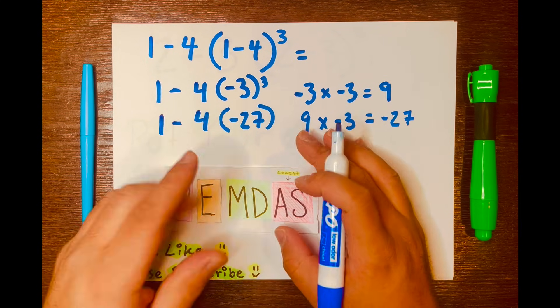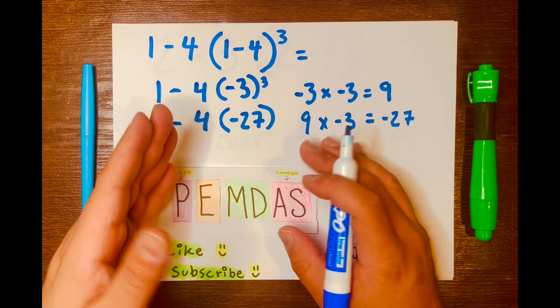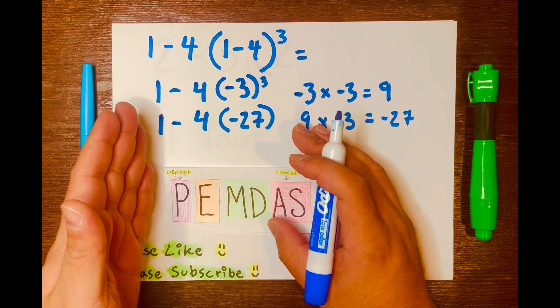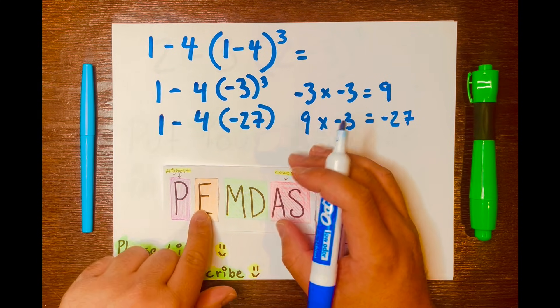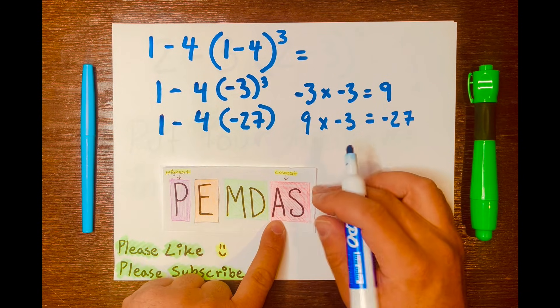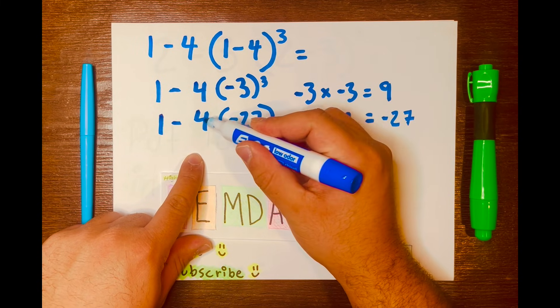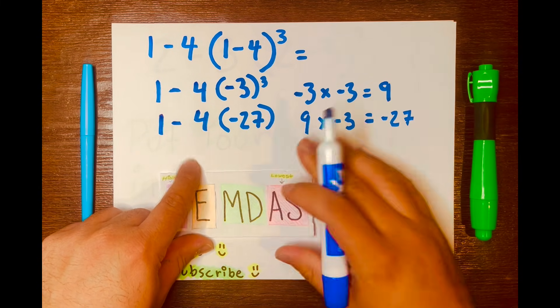And remember that when you're solving math problems like this with different operations, you want to solve the problem from left to right according to PEMDAS. So subtraction will be the lowest level and multiplication will be the highest level. So 4 times negative 27 goes first.